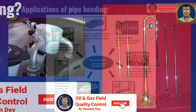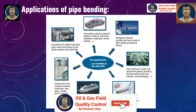Applications of pipe bending include: in the automotive industry — exhaust systems, brake and fuel lines, stabilizers; aerospace industry — profiles and lines made of light metals and special alloys; pipe working in power and production plants; chemical, pharmaceutical, food industry, biotechnology, HVAC bending, heat exchangers and ventilation coolant tubes; shipbuilding and marine industry; construction and furniture industry — handrails, door grips, tubular steel furniture; and pipeline manufacturing, installation, and construction, as well as industrial and mobile hydraulics.